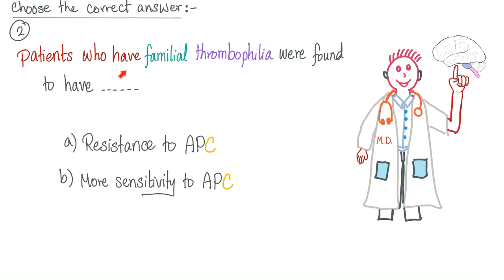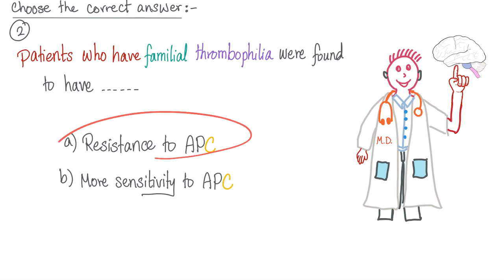Some patients have a disease called familial thrombophilia — hereditary thrombosis, thrombosis all day every day. These patients were found to have resistance to activated protein C rather than more sensitivity to APC. The correct answer is resistance to APC. They are resisting the brakes, therefore they have nothing but acceleration of the process of thrombosis.